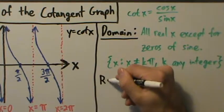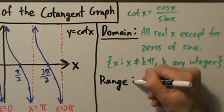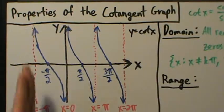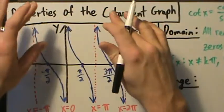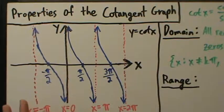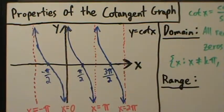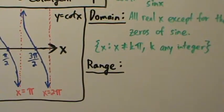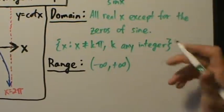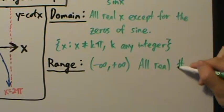The next thing to talk about is the range. Just like the tangent function, the range is relatively simple. We have arrows up here meaning the graph keeps going infinitely far up, and arrows down here meaning it goes infinitely far down. No matter how far up or down you go, you'll always have a point on the graph. So every y value appears somewhere on the graph, meaning the range is negative infinity to positive infinity, or all real numbers.